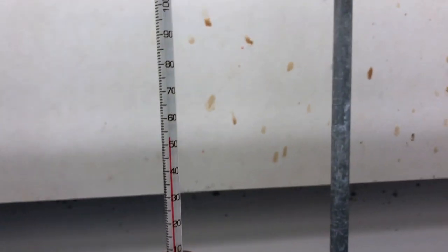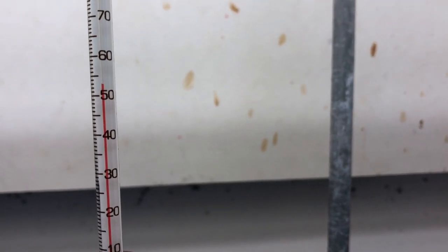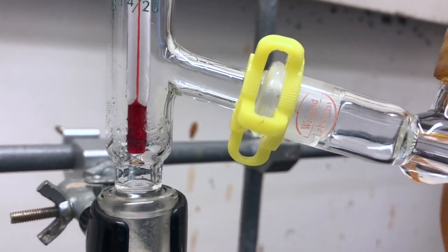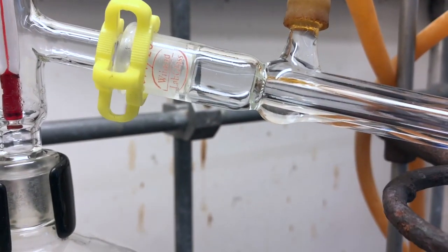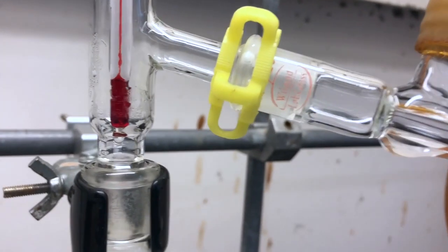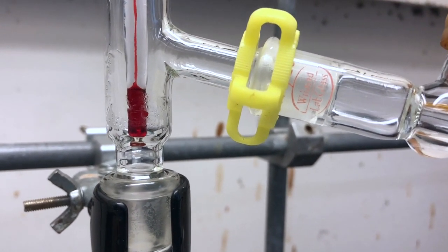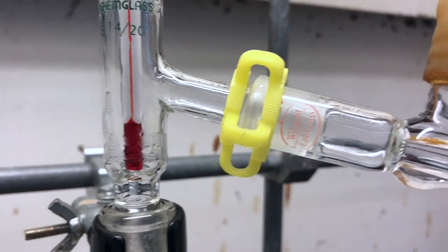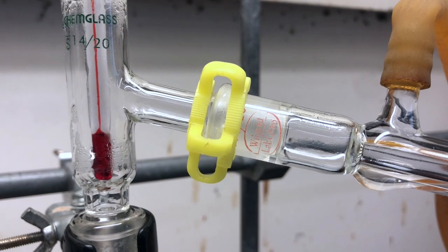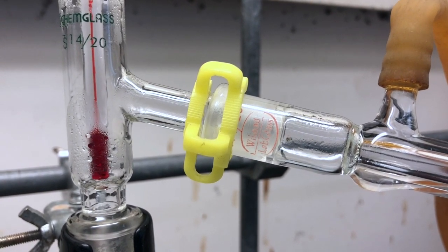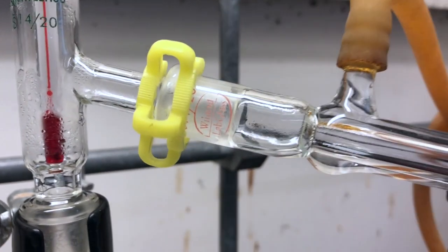You should see droplets of liquid starting to form on the sidearm. You can see the temperature is rising quickly at this point. Inside the distillation head is starting to look a little wet. Now you can start to see condensation happening heading towards the condenser. Liquid will start to build up right at the joint between the two pieces and eventually the liquid will fall back down into the condenser and run into our graduated cylinder.